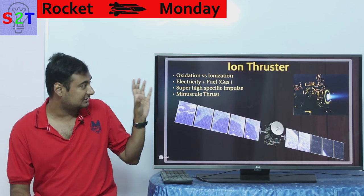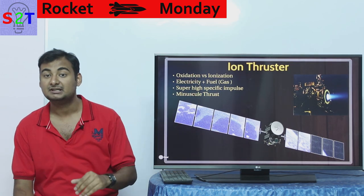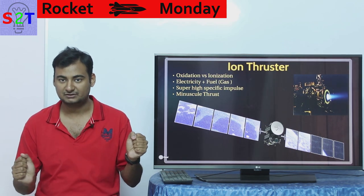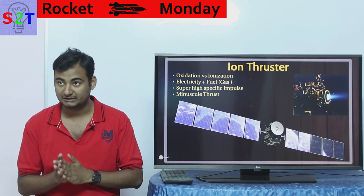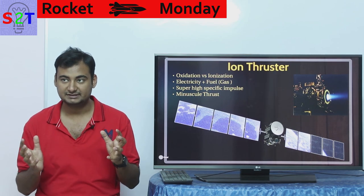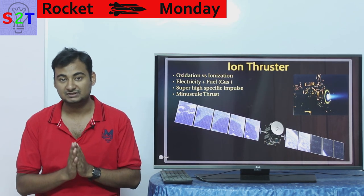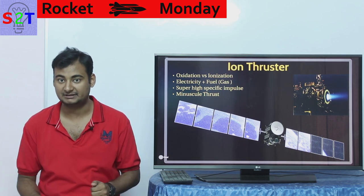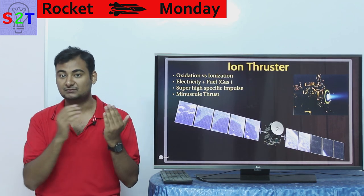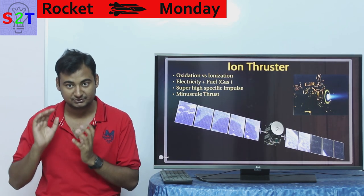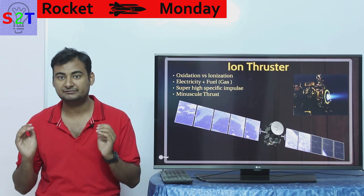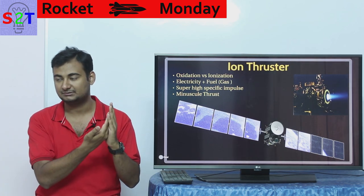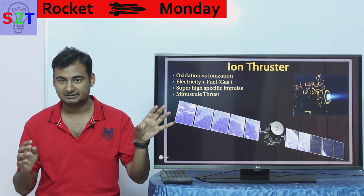In ion thrusters, we replace that oxidation stage with ionization. Ionization means stripping electrons away from an element or gas, creating charged particles — which we call ions. Ions have the benefit that you can control them with magnetism or electricity. Basically, ions will flow toward an anode or cathode. Using magnets to propel them, or simply using two conducting materials where one pushes positive particles and another absorbs negative ones, you can easily get propulsion.